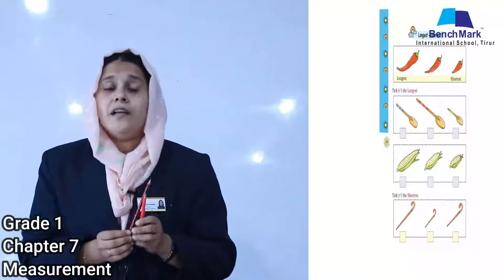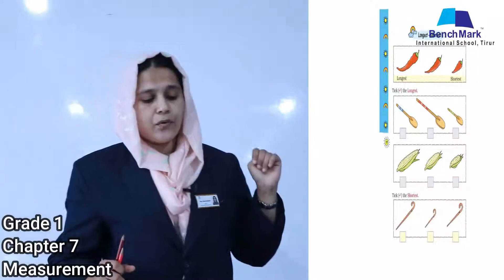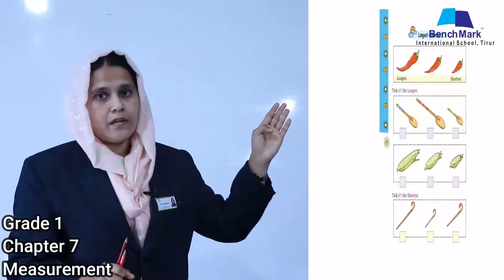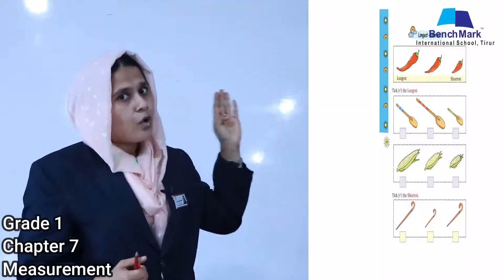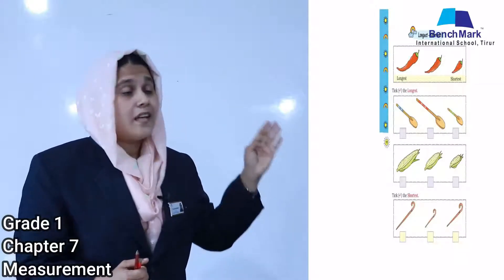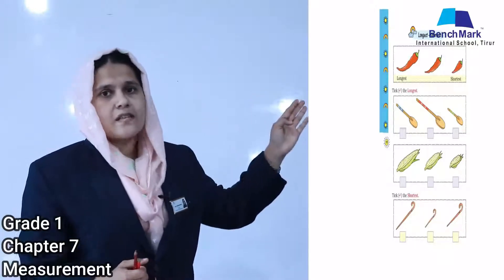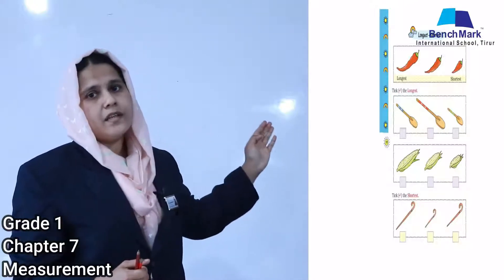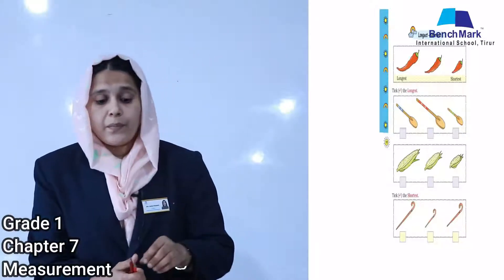Look at your textbook page number 94. The questions ask you to tick the longest one — compare the objects and tick the longest one. The next question asks you to tick the shortest one — compare the objects and tick the shortest one.